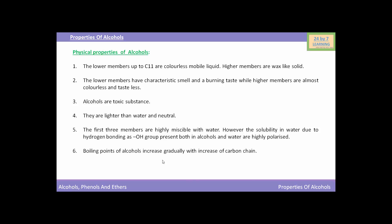Boiling points of alcohols increase gradually with increase of carbon chain length. Among isomeric alcohols, the boiling points are in the following order: primary alcohols have higher boiling points than secondary alcohols, while secondary alcohols have higher boiling points than tertiary alcohols. These are the physical properties of alcohols.